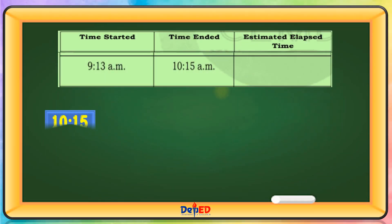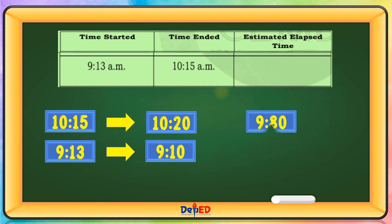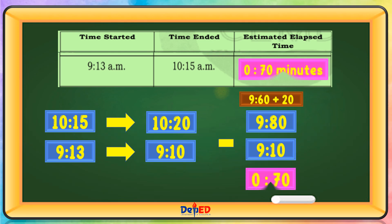From 9:13 to 10:15 — round off to the nearest tens: 10:15 becomes 10:20, and 9:13 becomes 9:10. Since we need to borrow, 10:20 becomes 9:80, then 9:80 minus 9:10 equals 70 minutes.